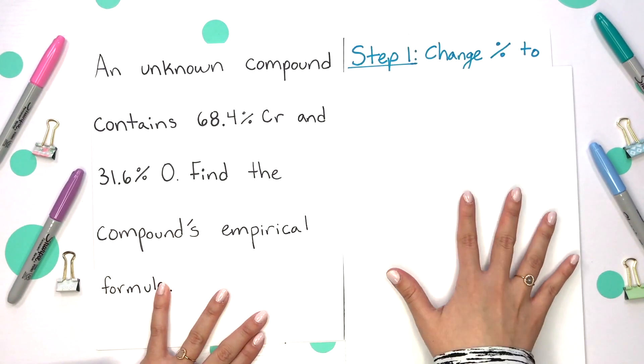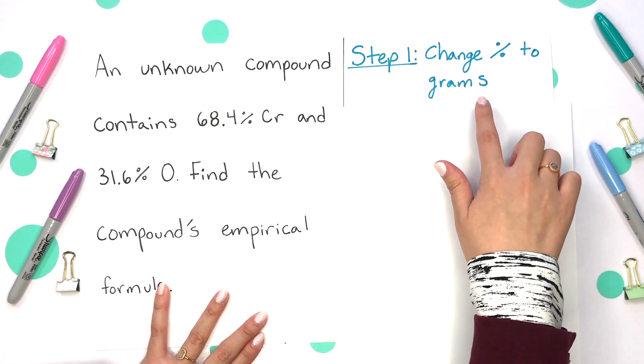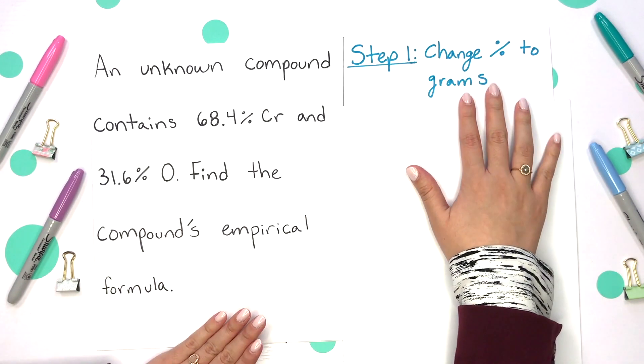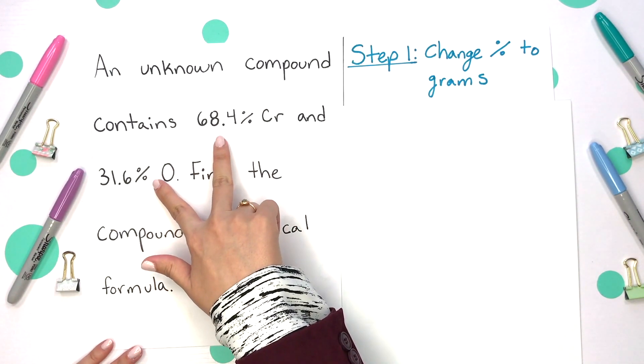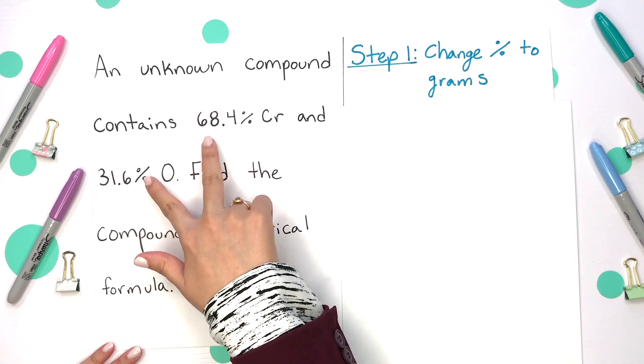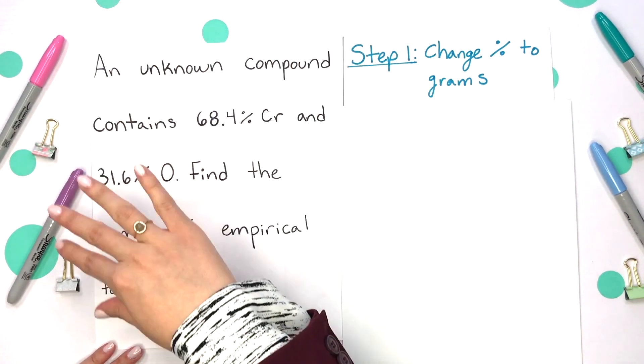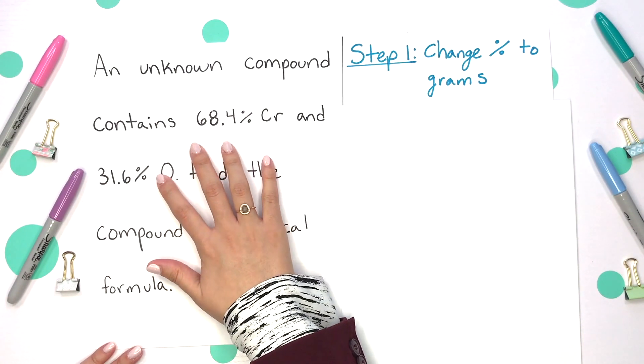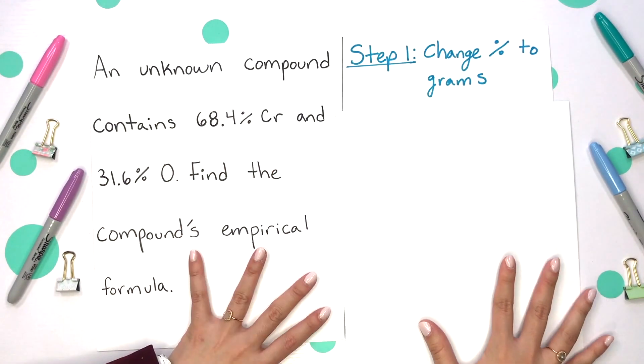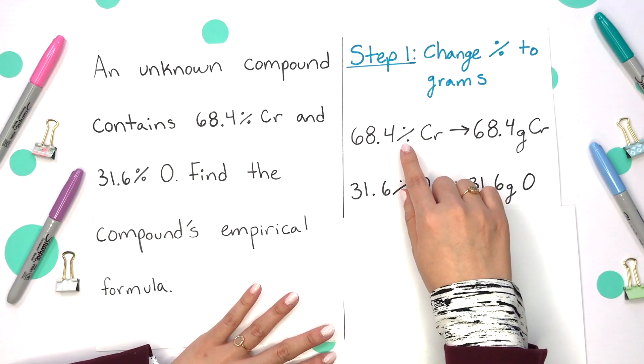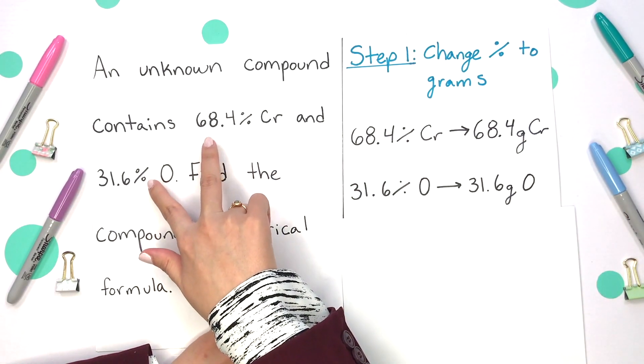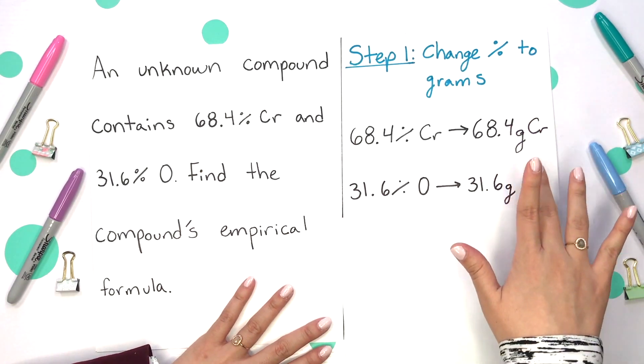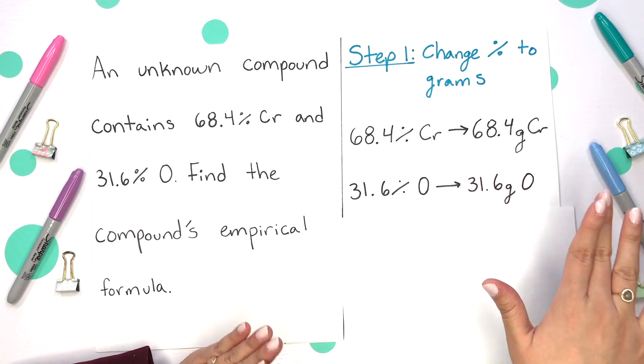First step is to change your percentage to grams. The reason we can just automatically do this is because if you were to add both of these numbers together you would get a hundred percent. So this entire compound or percentage is out of a hundred percent. There's no need to convert anything. Literally change your percentage to grams if this is out of a hundred percent.